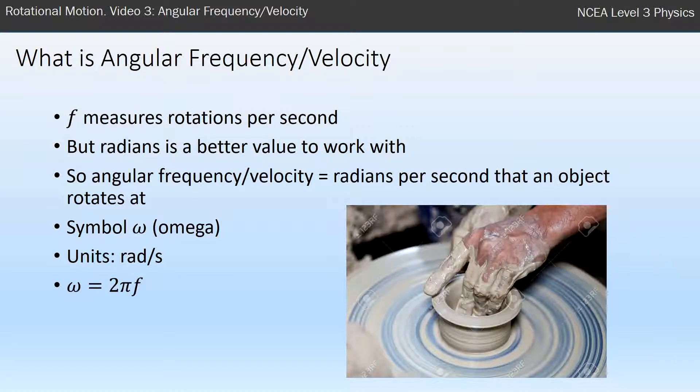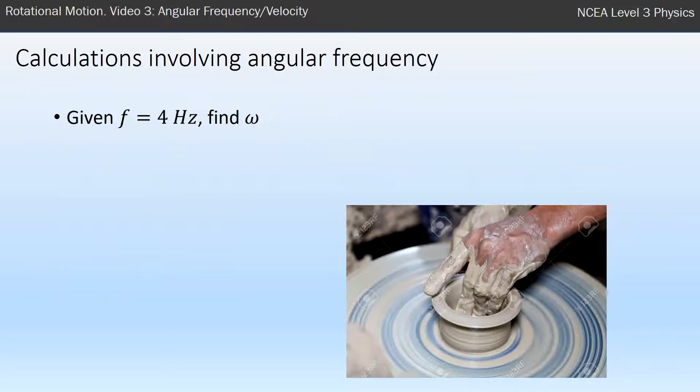The way we calculate omega or angular frequency is through the formula omega equals 2 pi f. So as a very easy example of how to use this formula...